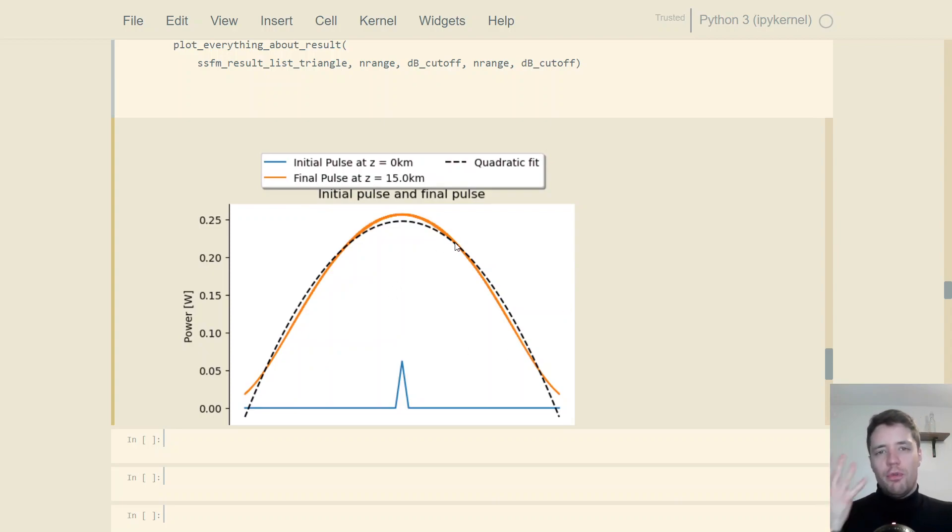So it's kind of interesting that we can launch these four different pulse shapes into the same fiber, and in the end, after propagating for a sufficiently long distance, we get basically the same parabolic shape coming out. Now this shape here, which actually just is a regular parabola with a negative curvature, is the shape that's characteristic of these similaritons.